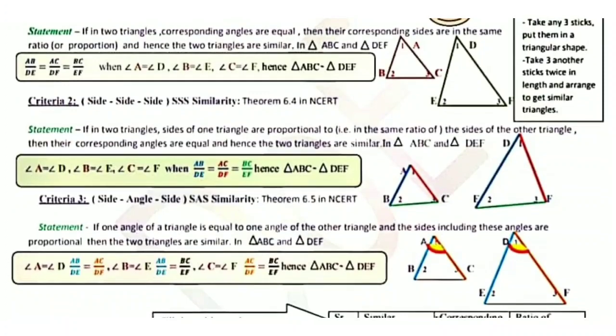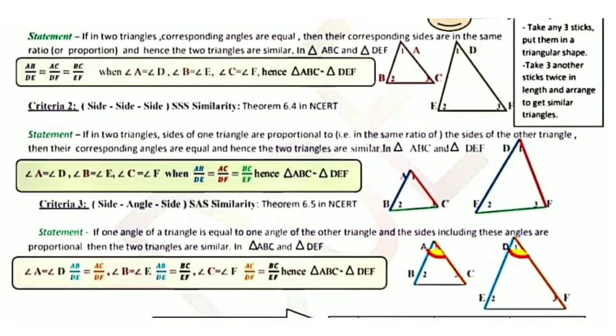If one angle of a triangle is equal to one angle of the other triangle and the sides including these angles are proportional, then the two triangles are similar. In triangle ABC, AB is proportional to DE and AC is proportional to DF, and angle A is equal to angle D. Given that, angle B equals angle E and angle C equals angle F, and BC upon EF ratio is equal. Hence triangle ABC is similar to triangle DEF. These three are the similarity criteria.